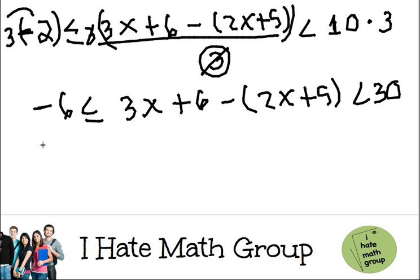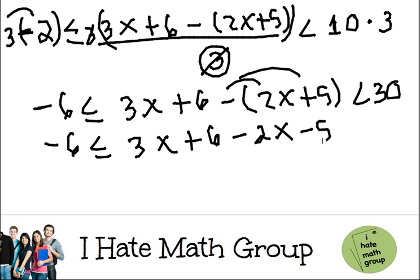Now I'm going to do the parenthesis. Negative 6 less than or equals 3x plus 6, positive and negative is negative 2x minus 5, less than 30. And now I'm going to go ahead and group: 3x minus 2x is just x, 6 minus 5 is just 1.